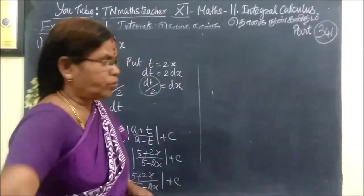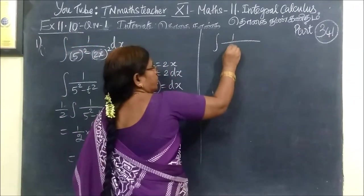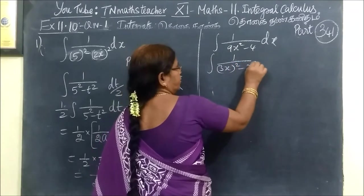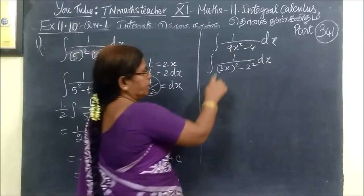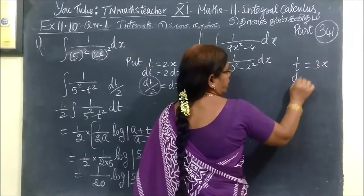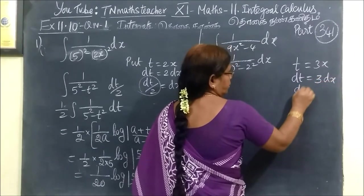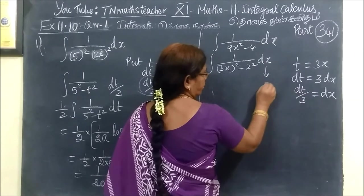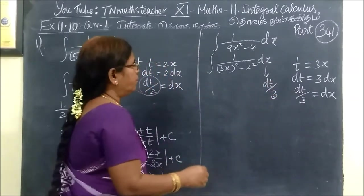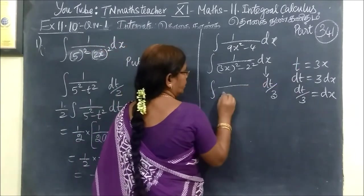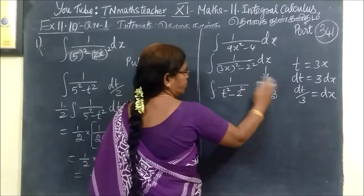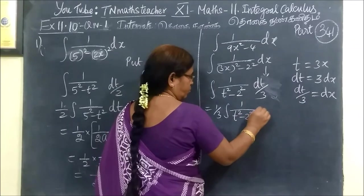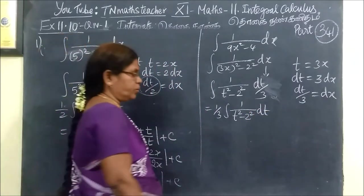Coming to the next question: 9x squared minus 4. So integral of 1 by 9x squared minus 4 dx. We write this as integral of 1 by 3x squared minus 2 squared dx. Let t equal to 3x, therefore dt equals 3 dx, so dx equals dt by 3. In place of 3x, we substitute t. So it becomes 1 by 3 integral of 1 by t squared minus 2 squared dt. This comes in standard form.